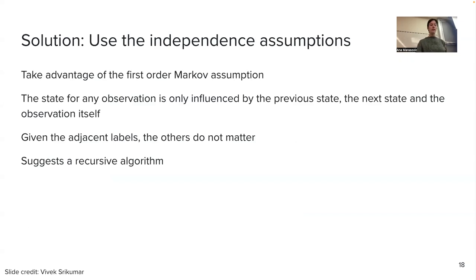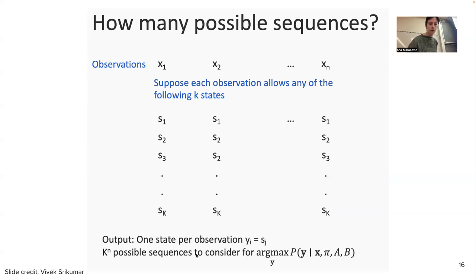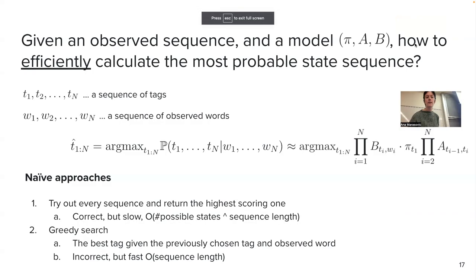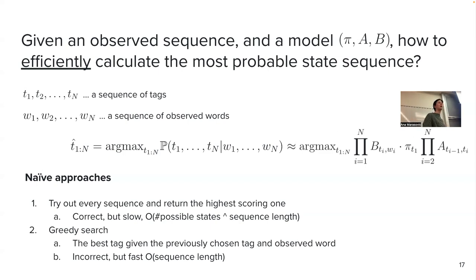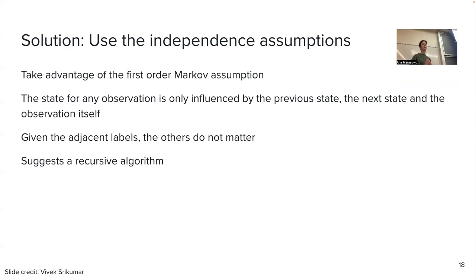What we're going to do is take advantage of our first-order Markov assumption and output independence assumption, which says that given adjacent labels, others do not matter. This suggests a recursive algorithm. The maximization over each tag can be moved to the appropriate part of the equation, and the fact that we moved the maximization over the first tag and left the rest to be maximized over I2 to IN comes from those assumptions.